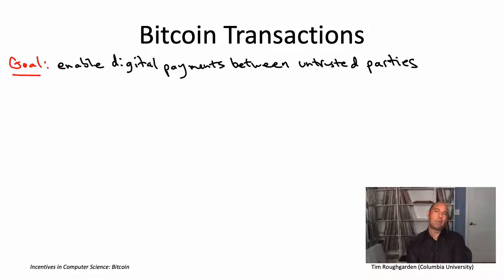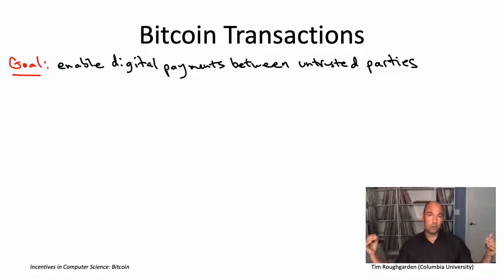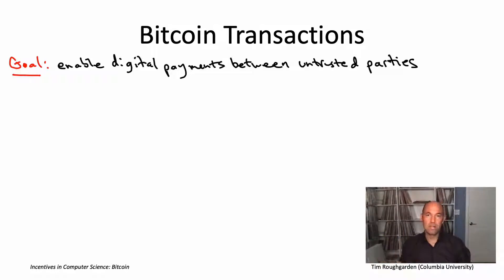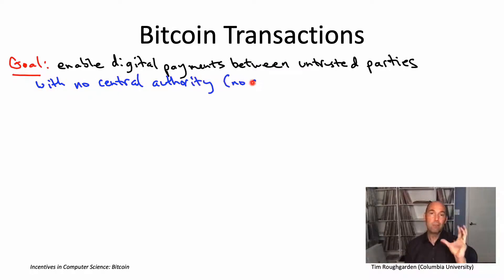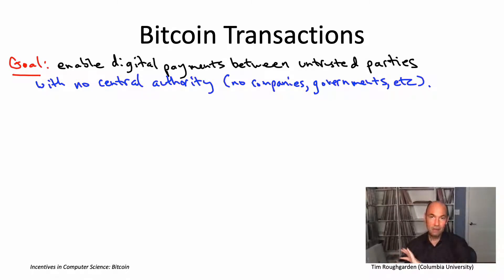Now, this in and of itself is not so impressive. We didn't need a digital currency like Bitcoin to solve this problem. For example, systems like PayPal or Venmo already enable two parties who don't necessarily trust each other directly. They allow them to transact because PayPal acts as a trusted intermediary in a transfer of funds from one of the untrusted parties to the other. So the point of a cryptocurrency like Bitcoin is to enable digital payments between untrusted parties without any centralized authority, without any point of trust analogous to PayPal or Venmo or a credit card company or a government — literally nobody's trusted, and yet still you're going to wind up with secure payments from one untrusted party to another.